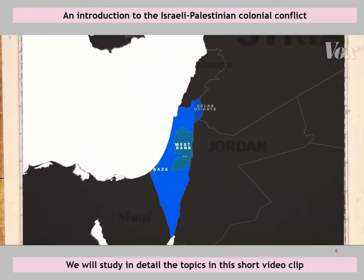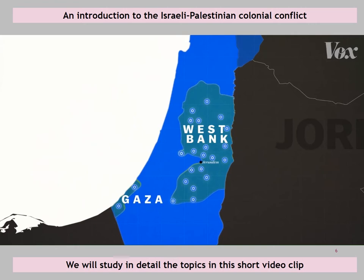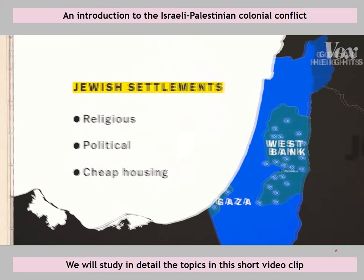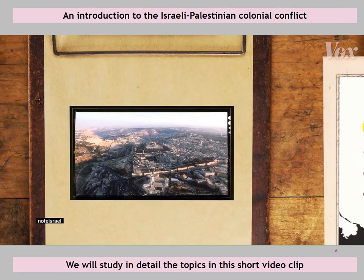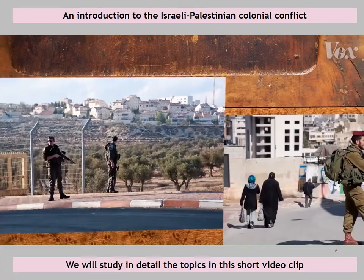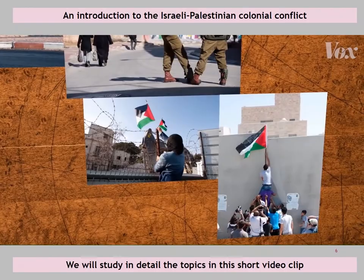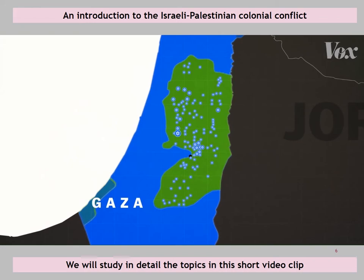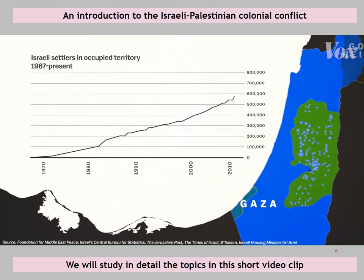As all of this was happening, something dramatic was changing in the Israel-occupied Palestinian territories — Israelis were moving in. These people were called settlers, and they made their homes in the West Bank and Gaza whether the Palestinians wanted them or not. Some moved for religious reasons, some to claim the land for Israel, some just because the housing is cheap, often subsidized by the Israeli government. Some settlements are cities with thousands of people, others are small communities deep into the West Bank. Settlers were followed by soldiers to guard them, and the growing settlements forced Palestinians off of their land and divided communities. Today, there are several hundred thousand settlers in occupied territory, even though the international community considers them illegal.